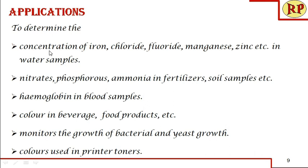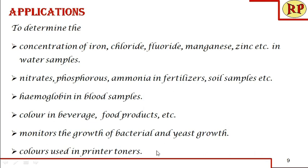There are many applications of colorimetric analysis. We can analyze the concentration of iron, chloride, fluoride, manganese, and zinc in water samples; nitrates, phosphorus, and ammonia in fertilizers and soil samples, as these are essential macronutrients. We can also analyze hemoglobin content in blood samples, colour in beverages and food products, monitor growth of bacteria and yeast for biological applications, and analyze colours used in printer toners.